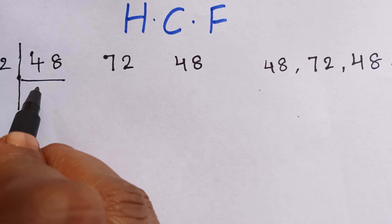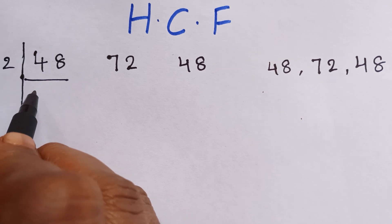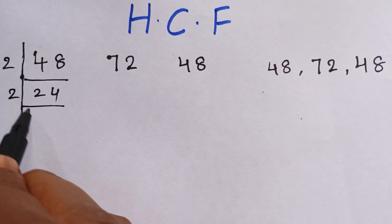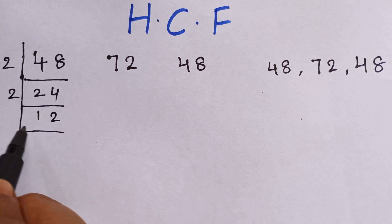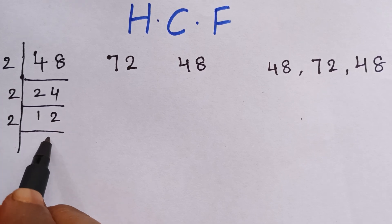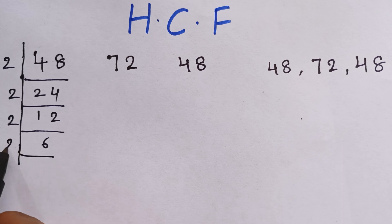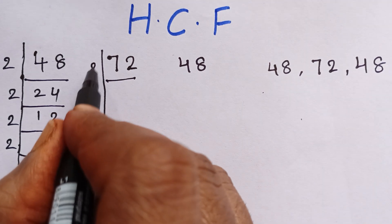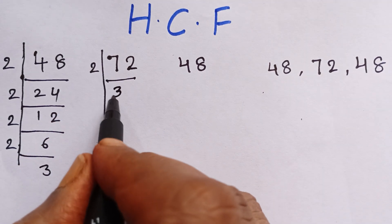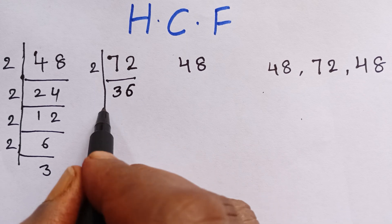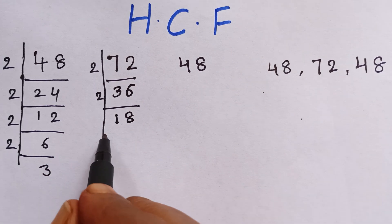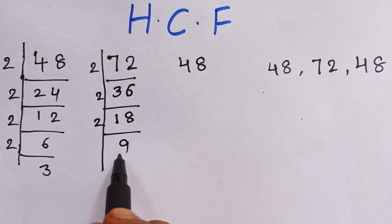For the first number, we take the two times table: two twos are four, two fours are eight, two ones are two, two twos are four, two sixes are twelve, two ones are two, two eights are sixteen, two nines are eighteen.